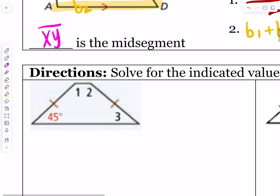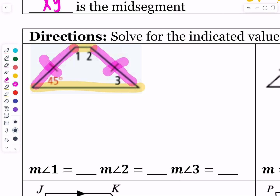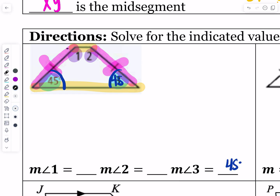On each practice problem, first ask yourself: is it an isosceles trapezoid or not? Here the legs are marked congruent, so it is isosceles. Since this angle is 45°, angle 3 is also 45° — base angles on the same base are congruent. For angles 1 and 2, using same-side interior angles: 180 minus 45 equals 135 degrees. Since it's isosceles, angle 1 and angle 2 are both 135 degrees.